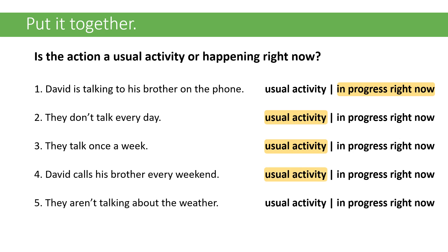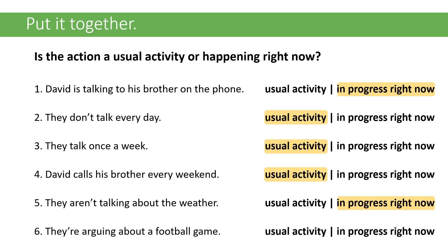'They aren't talking about the weather' — we look at the verb, it's present progressive, so it's in progress right now. 'They're arguing about a football game' — again, look at the verb, it's progressive, so it's in progress right now. Once you understand that, it's actually a really simple question to answer.